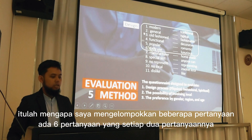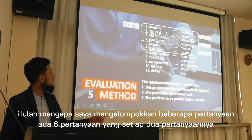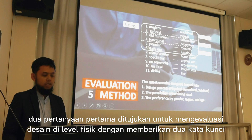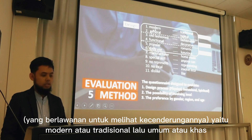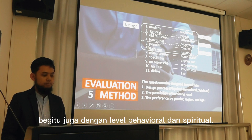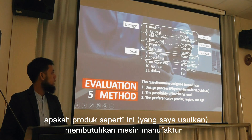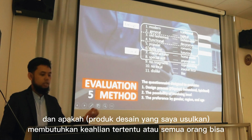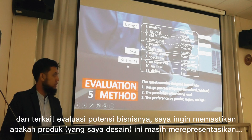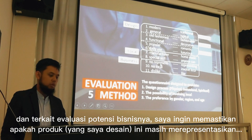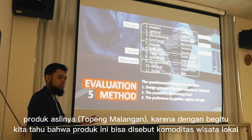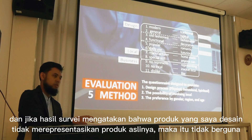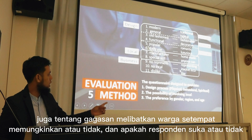So that's why in all of the questions I put six questions. Two of them represent the physical level, which is affected by the chosen model — traditional, typical — and the behavioral and spiritual aspects. About involving the local, I have to make sure whether this kind of product requires a manufacturer or can it be done by homemade, and whether it requires a special skill or anyone can do it. About the business level, I want to know whether this product still represents the original product, so we can call it a tourism commodity, because if it no longer represents the original, it's no use.